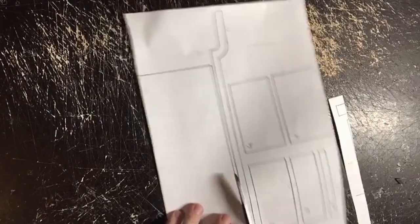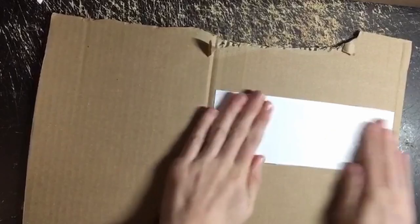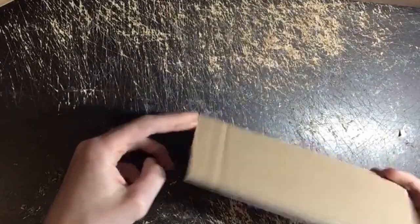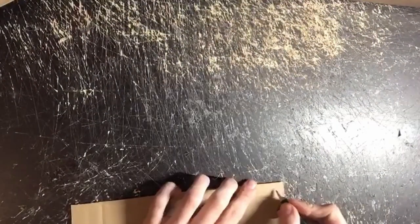First, print out the templates from the video description and cut out the individual parts. Glue them on a piece of cardboard and cut everything out. At the end, you can remove all paper scraps and label the parts if necessary.